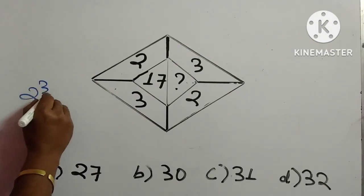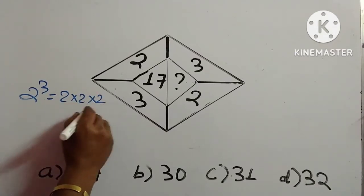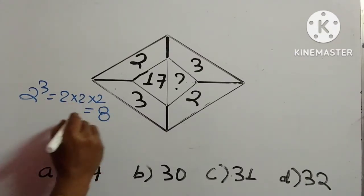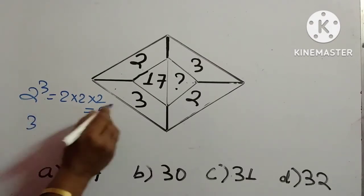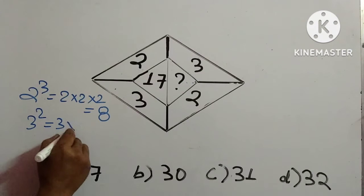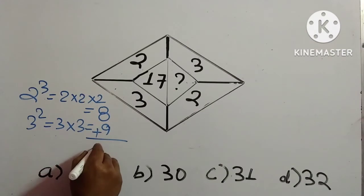2 cube is 2 into 2 into 2 which is equal to 8. And this 3 square is 3 into 3, so 3 into 3 is 9. Now add 9 and 8